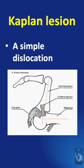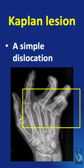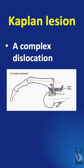In a simple dislocation of the fingers, the dislocated proximal phalanx will be almost perpendicular to the metacarpal axis, and the volar plate will still cover the metacarpal head, and the x-ray will appear like this.